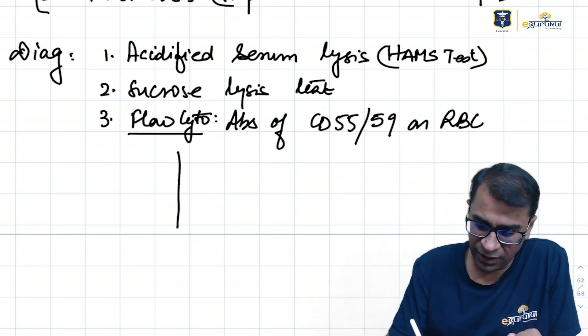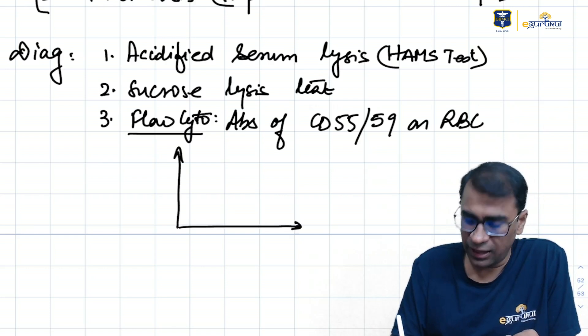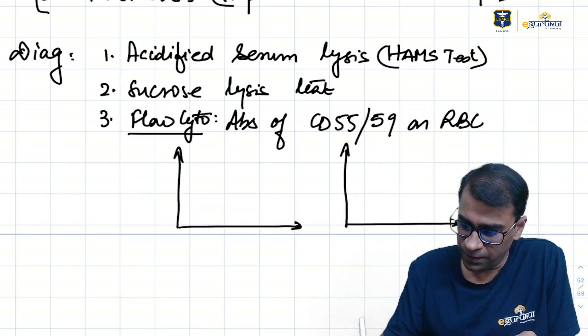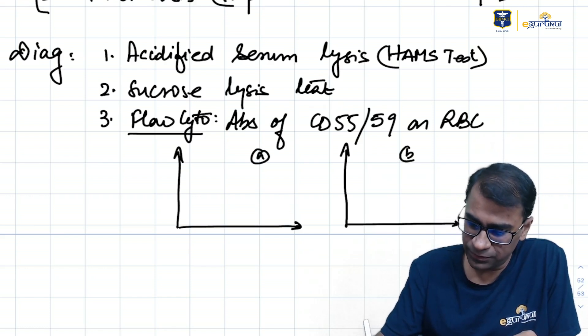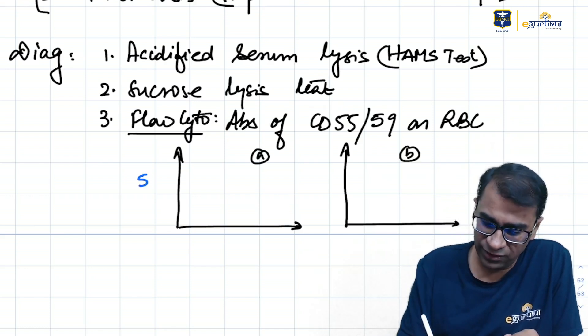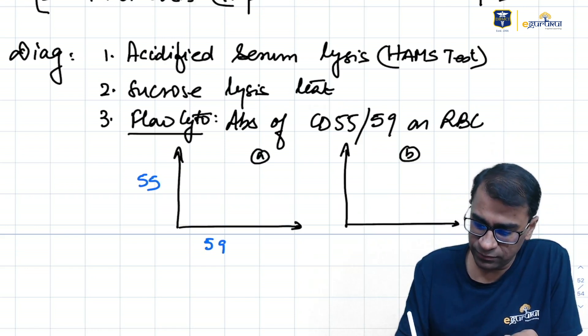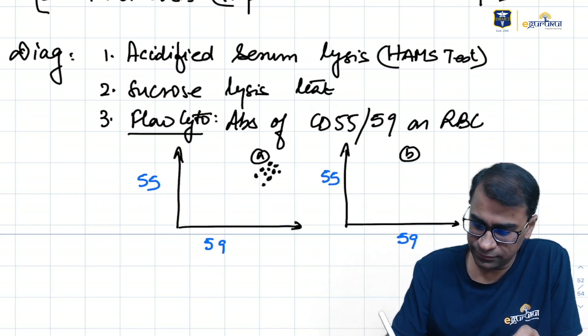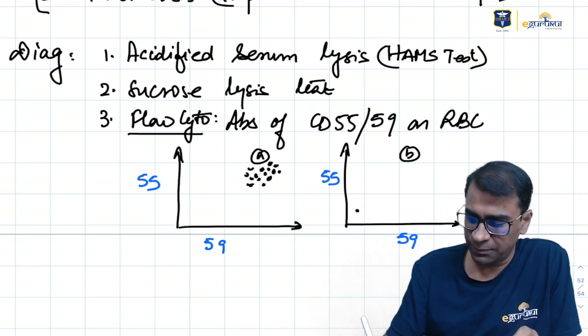So how to understand this? Suppose I make a graph. Fastest finger first. Graph A, Graph B. In one of them, I am writing 55 here, 59 here. 55 here and 59 here. In one of them, the cells are being seen here.